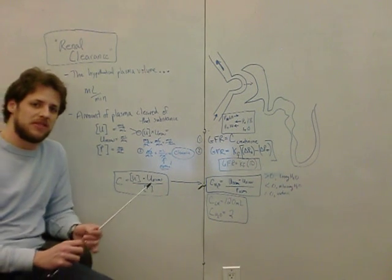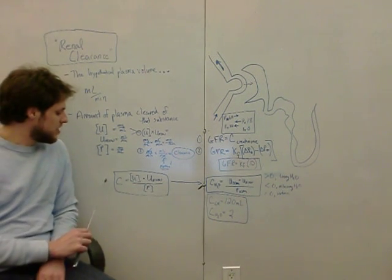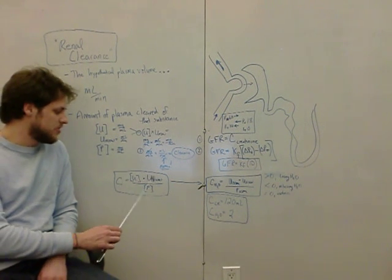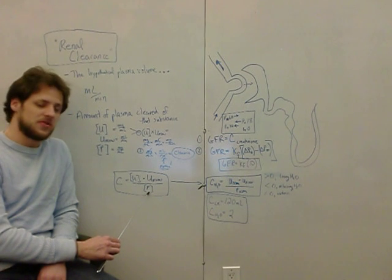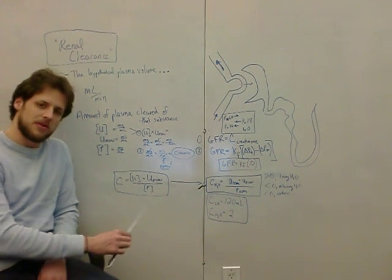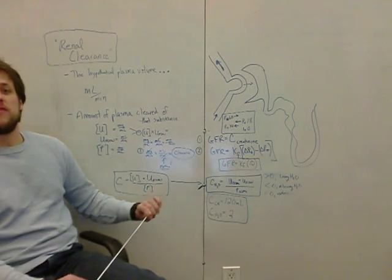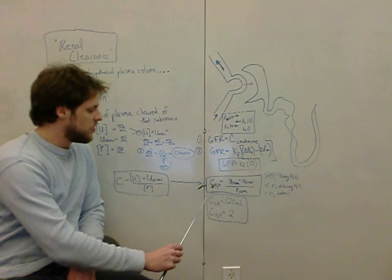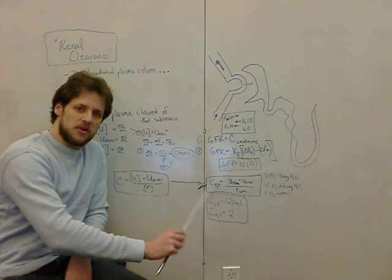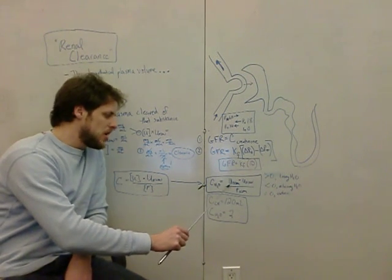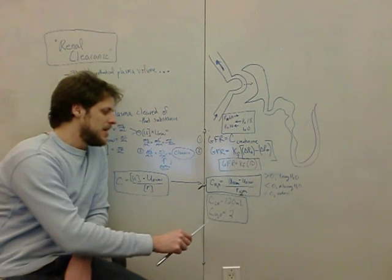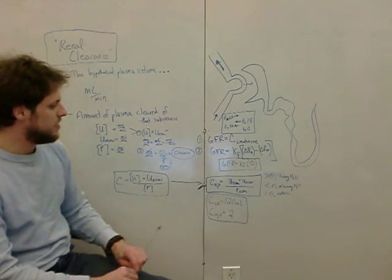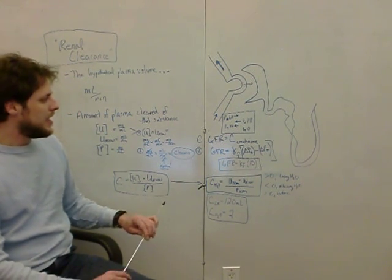The formula to lock in your head is: Clearance = (U × V) / P — urine concentration times urine flow rate divided by plasma concentration. For free water clearance, it's a similar structure: free water clearance equals urine osmolality times urine flow rate divided by plasma osmolality.